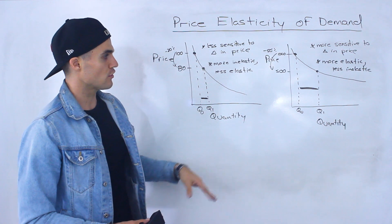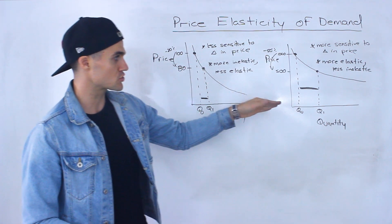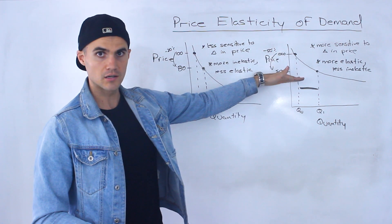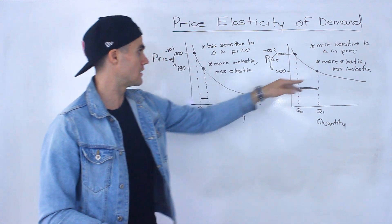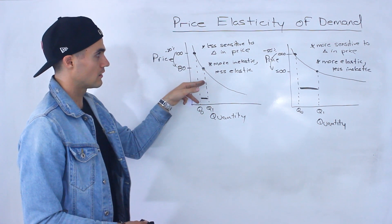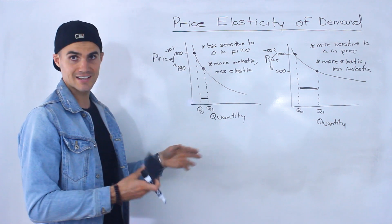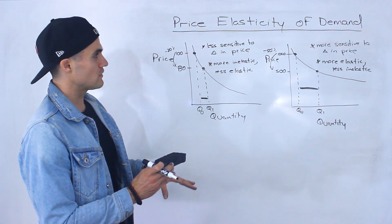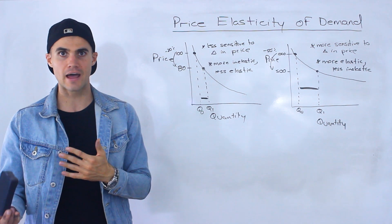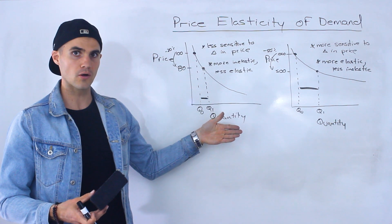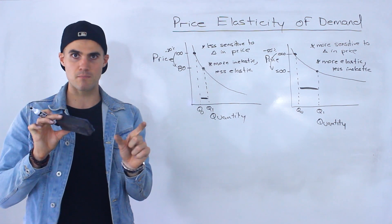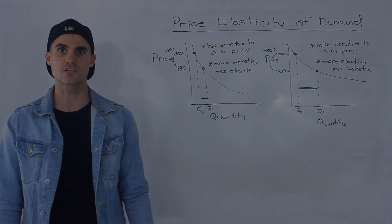In conclusion: the more sensitive consumers are to a price change — the more that quantity demanded increases — the more elastic a product is, or the less inelastic it is. Versus the less sensitive consumers are to price changes, the more inelastic a product is, or the less elastic it is. At this point we've kept things fairly subjective. In the next video we'll go through the technical way to actually calculate a measure of elasticity, and then depending on what that measure is, we'll categorize goods and services as elastic or inelastic.